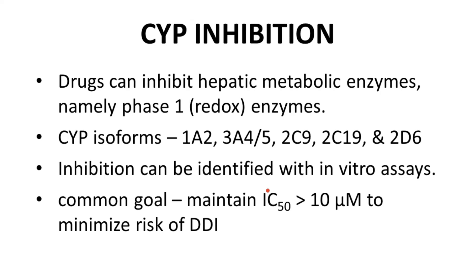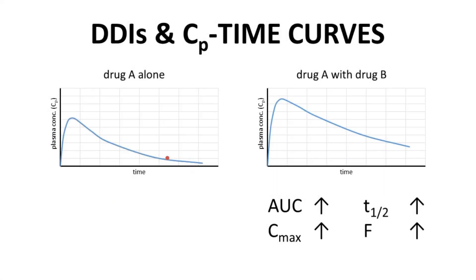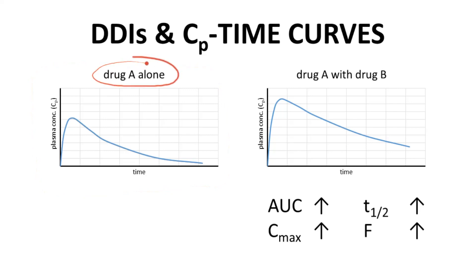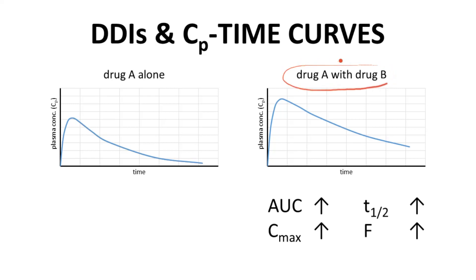So what does a PK-based DDI look like? On the left is a CP time curve for drug A — that is drug A alone — given as an oral dose. The drug is absorbed and then undergoes elimination. Drug A is going to be our victim in a DDI. Let's see what happens when drug A is taken with drug B, which is a CYP inhibitor and will be our DDI perpetrator.